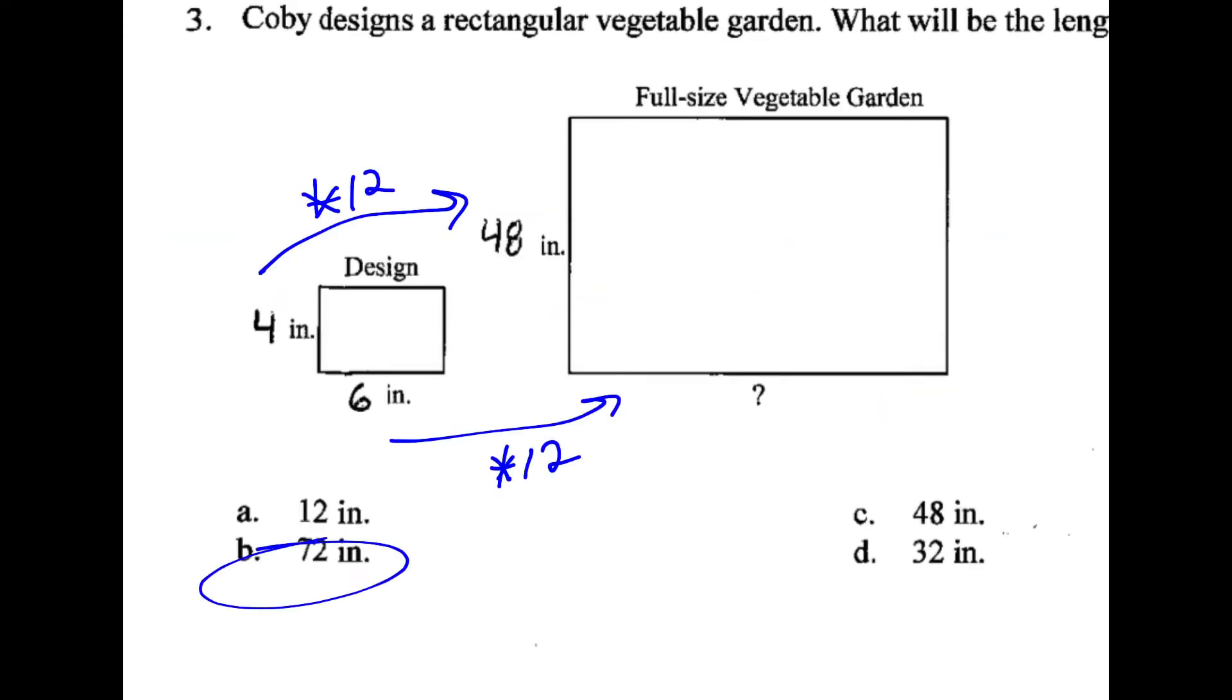For number 3, 4 is multiplied by 12 to get to 48. So we do the same thing with 6, we multiply it by 12, we get to 72.